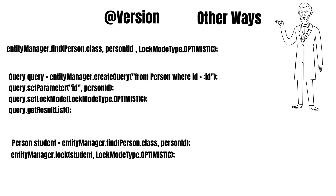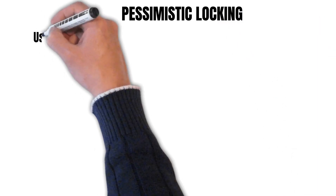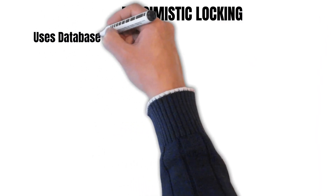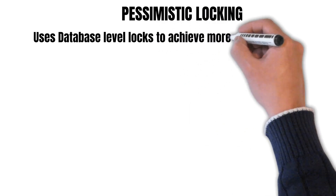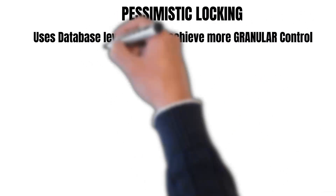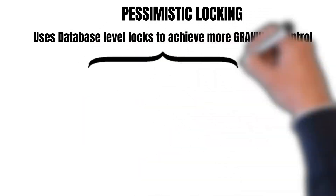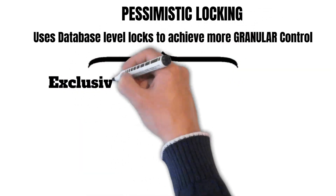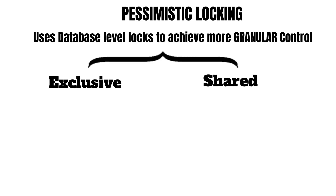Now let's talk about pessimistic locking. This uses database-level locks to achieve more granular control over shared data. Since it operates at the database level, there are two kinds of locks: an exclusive lock and a shared lock. In a shared lock, connections other than the owning connection can read the data but cannot write or delete it. Whereas with an exclusive lock, other connections can't even read the data, let alone write or delete it.